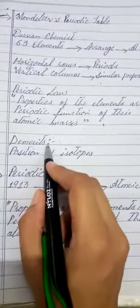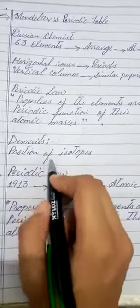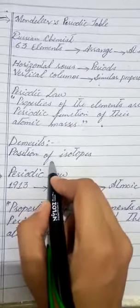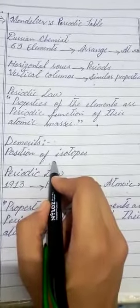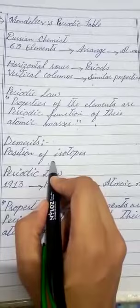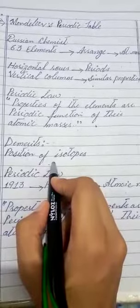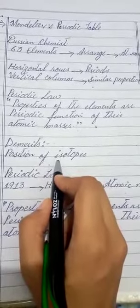His failure to explain the position of isotopes and the reverse order of atomic masses of some elements suggested that atomic mass of an element cannot serve as the basis for the arrangement of elements.